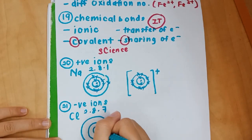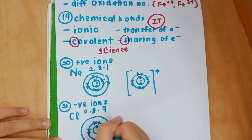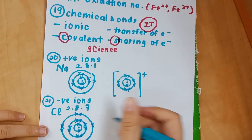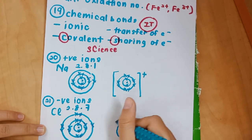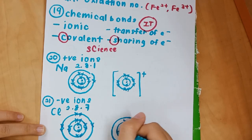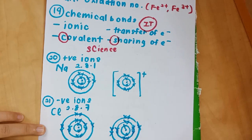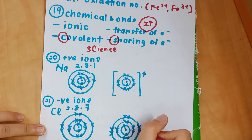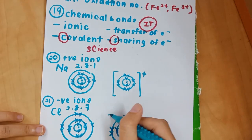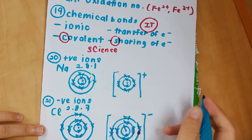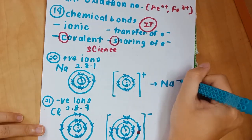For Cl, the electron arrangement is 2,8,7. Usually we write down the electron arrangement before drawing. Chlorine will accept one electron, and the electron that is accepted we usually use a different symbol - like let's say we used cross for all the electrons, then we use a circle for the electron that is accepted.